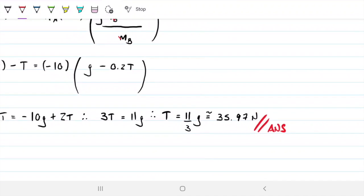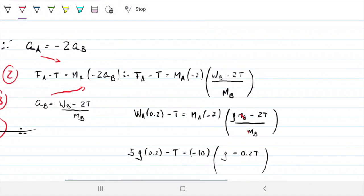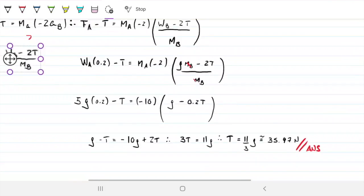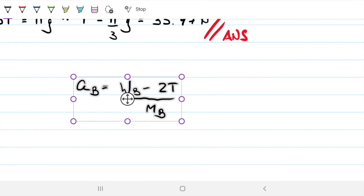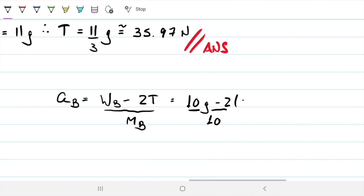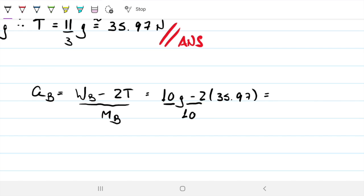And with that, then we can calculate the acceleration of A, acceleration of B, using the equations. For B, we're going to use this one here. For the acceleration of B, what we do is ten times gravity minus two times, divided by ten, two times 35.97, which equals 2.62. Positive, which means this is going in the downward direction. And that is one of our answers.